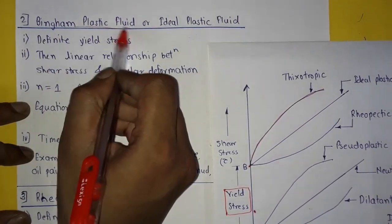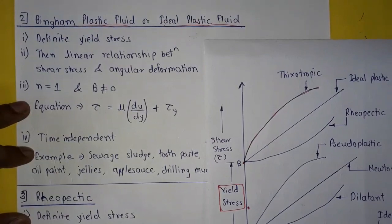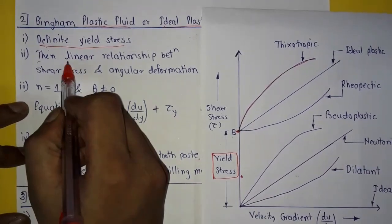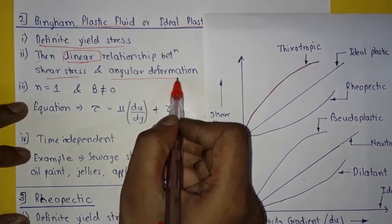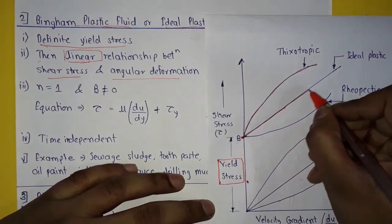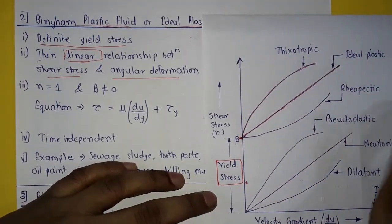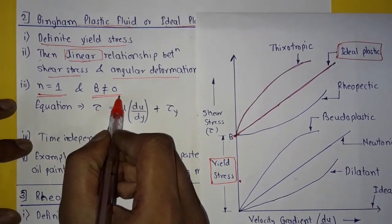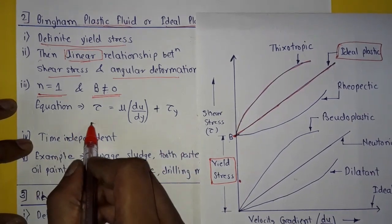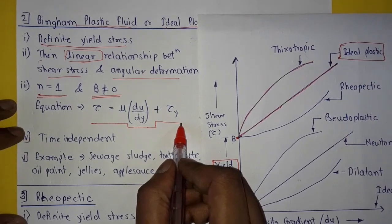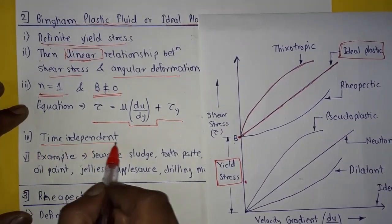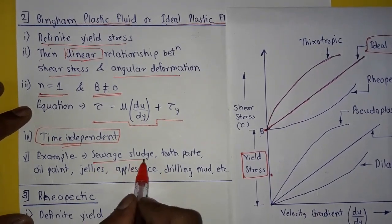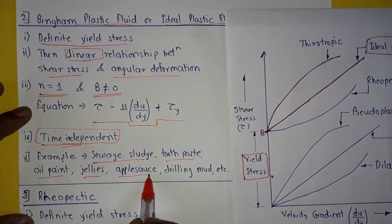Next is Bingham plastic fluid or ideal plastic fluid. It also has a definite yield stress, up to point b on the graph. After that, it has a linear relationship between shear stress and angular deformation, so it is a straight inclined line. Here, n is equal to 1 and b is not equal to 0, so the general equation becomes: tau equals mu times (du/dy) plus tau_y. It is a time-independent fluid. Examples are sewage sludge, toothpaste, oil paint, jellies, applesauce, drilling mud, etc.